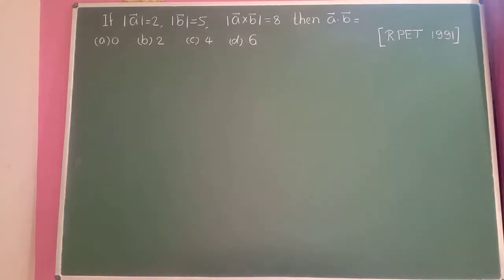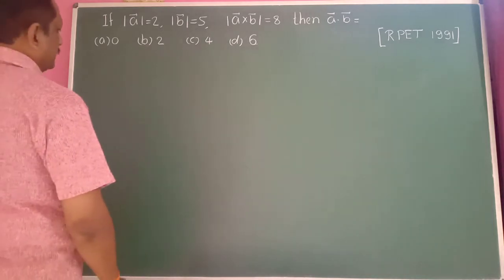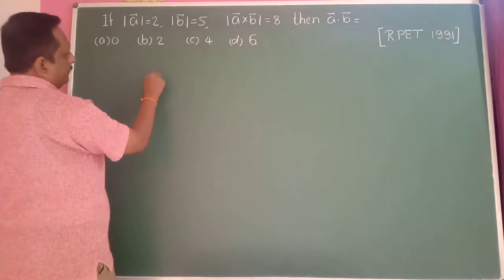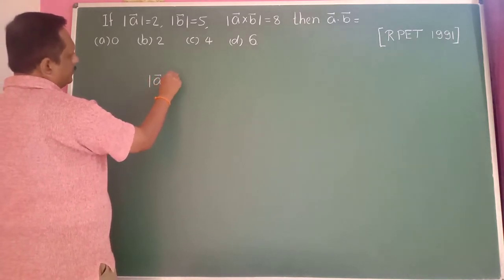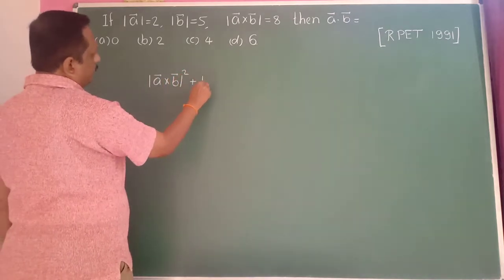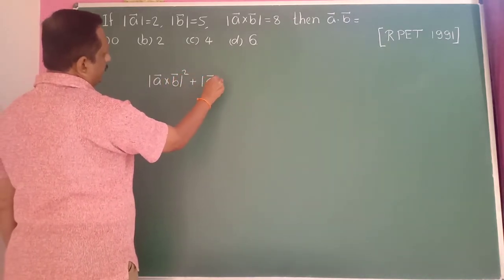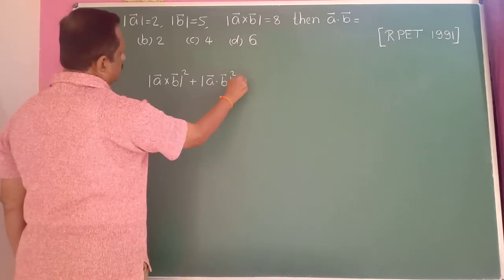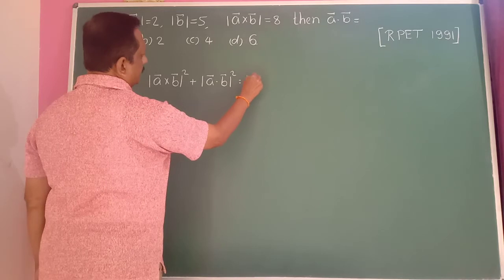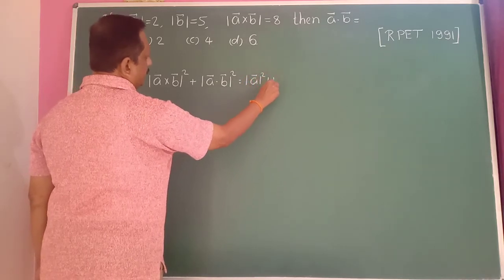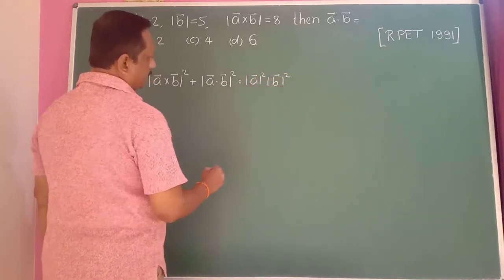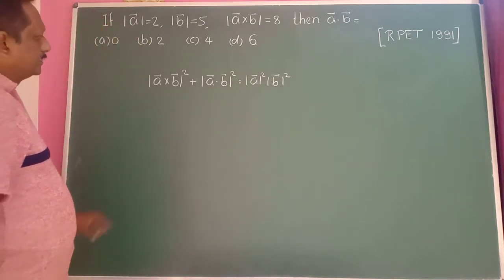If modulus of a-bar is 2, modulus of b-bar is 5, and modulus of a-bar cross b-bar is 8, then a-bar dot b-bar equals what? We use the standard formula: modulus of a-bar cross b-bar whole square plus modulus of a-bar dot b-bar whole square equals modulus of a-bar square into modulus of b-bar square.